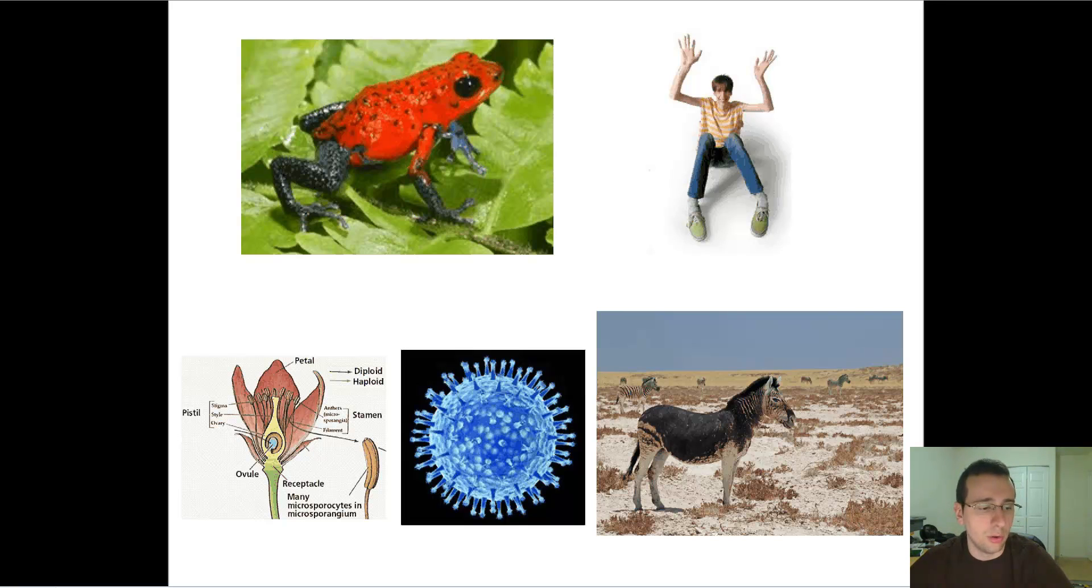One of the mechanisms is they put the pistil, which is the female part, higher than the stamen, which is the male part. And by doing that, they avoid some of the pollen falling inside the female part. But there are a lot of other things they will do as well.